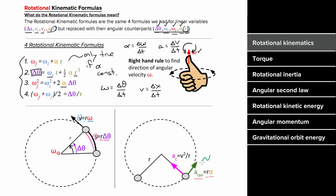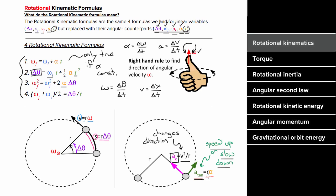Note that this is the tangential acceleration — this acceleration causes the object to speed up or slow down. It's the centripetal component of acceleration that causes the object to change directions, and the formula for that is still v squared over r. So if an object is moving in a circle, it must have centripetal acceleration because it's changing directions, but only if it's speeding up or slowing down will it have tangential acceleration and angular acceleration.